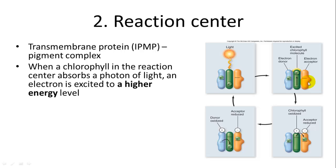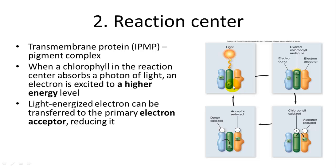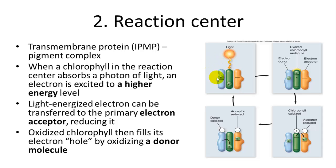Light excites an electron, which is accepted by an electron acceptor. A donor then gives another electron to the reaction center, which gets bumped to a higher energy level by light as well. The reaction center chlorophyll molecule is excited by light, jumping an electron to a higher energy level where it is accepted, and the electron donor replaces it.